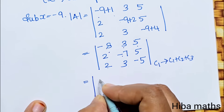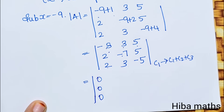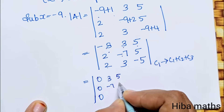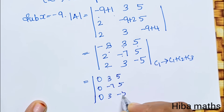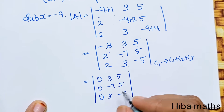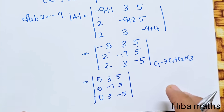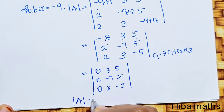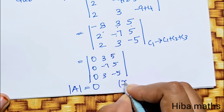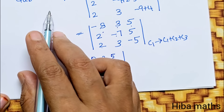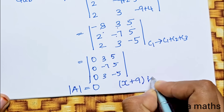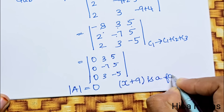After adding the three columns, the first column becomes (0, 0, 0), so the determinant value is 0. Therefore, when x = -9, the determinant is 0, and (x+9) is also a factor.